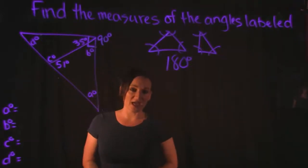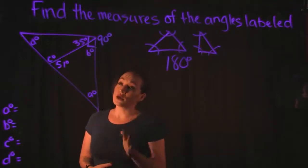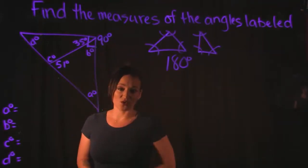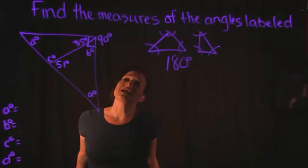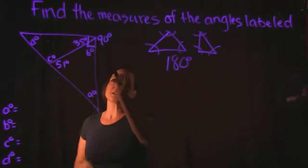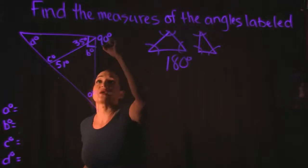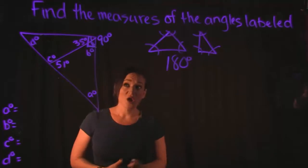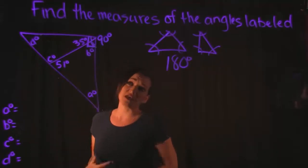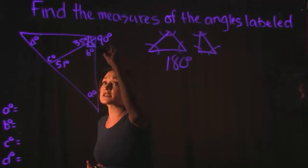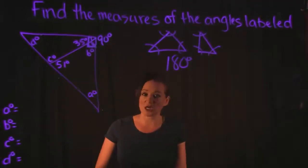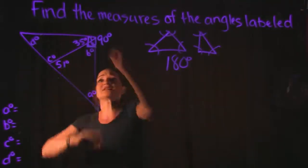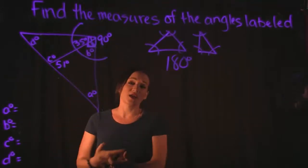That little square indicates a right angle, which equals 90 degrees. This top right corner is 90 degrees. That right angle is actually made up of two separate angles — one on each side — so both of those together have to equal 90 degrees. Anytime you see that little box, you know that angle is going to be a right angle equal to 90 degrees.